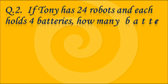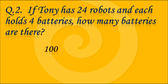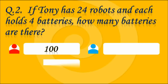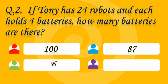Question number 2. If Tony has 24 robots and each holds 4 batteries, how many batteries are there? Options are 100, 87, 96, 93. Answer C — 96. How does it come? Because we multiply 24 by 4 and the answer is 96.